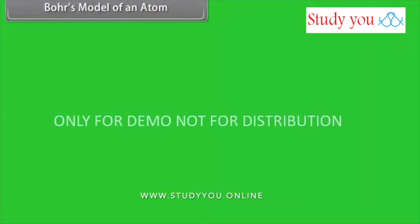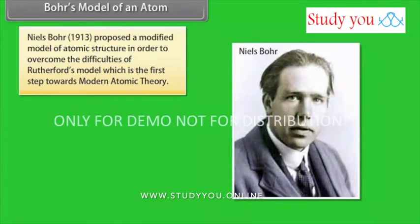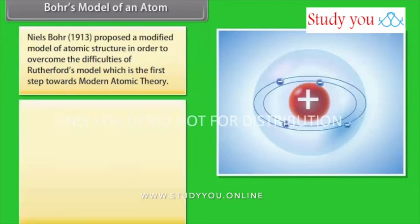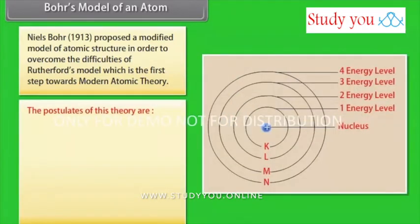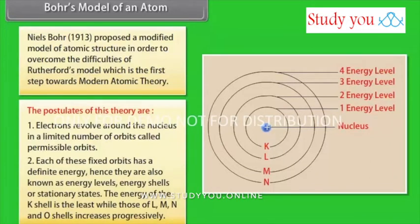Bohr's Model of an Atom. Niels Bohr (1913) proposed a modified model of atomic structure in order to overcome the difficulties of Rutherford's model which is the first step towards modern atomic theory. The postulates of this theory are: Electrons revolve around the nucleus in a limited number of orbits called permissible orbits. Each of these fixed orbits has a definite energy, hence they are also known as energy levels, energy shells or stationary states.